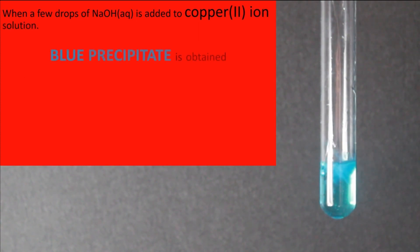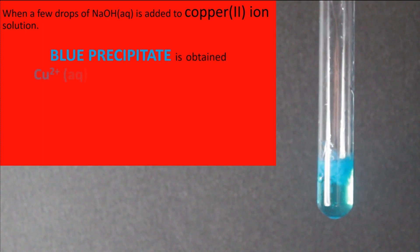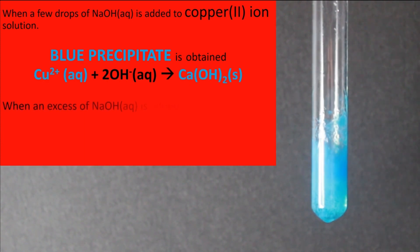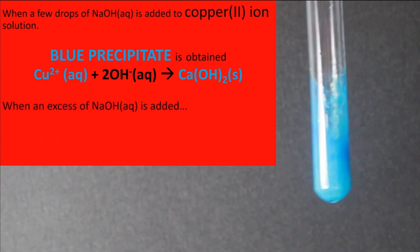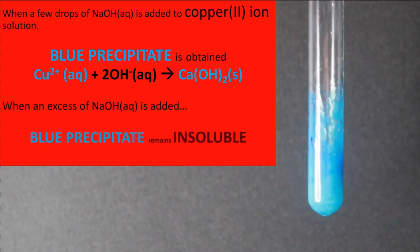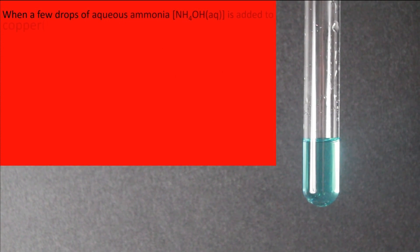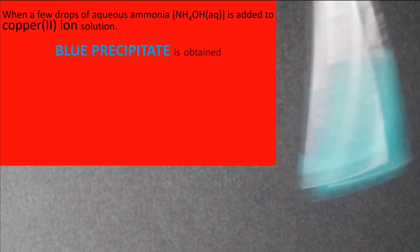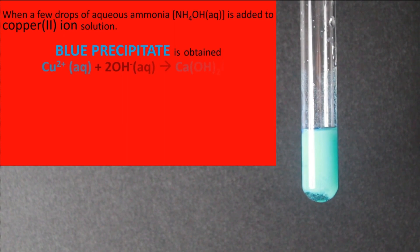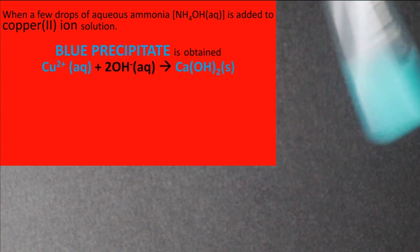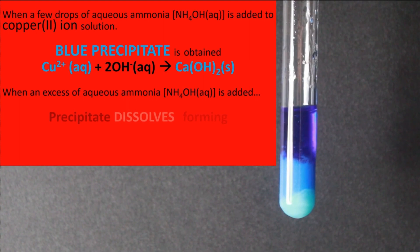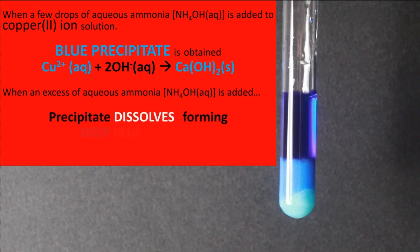Copper 2 ions give a blue precipitate with aqueous sodium hydroxide, and this precipitate is insoluble in excess sodium hydroxide. Copper 2 ions give a blue precipitate with aqueous ammonia, and this precipitate is soluble in excess aqueous ammonia, forming a deep blue solution.